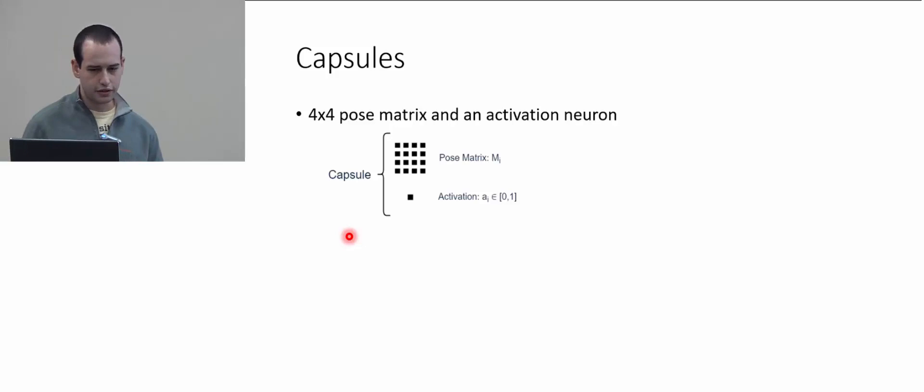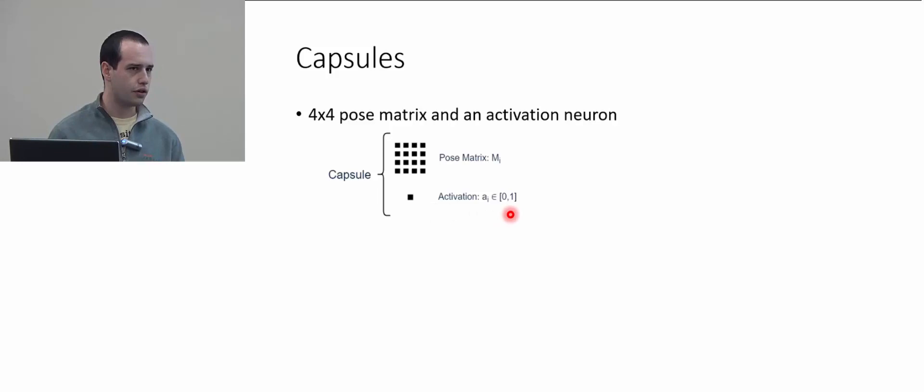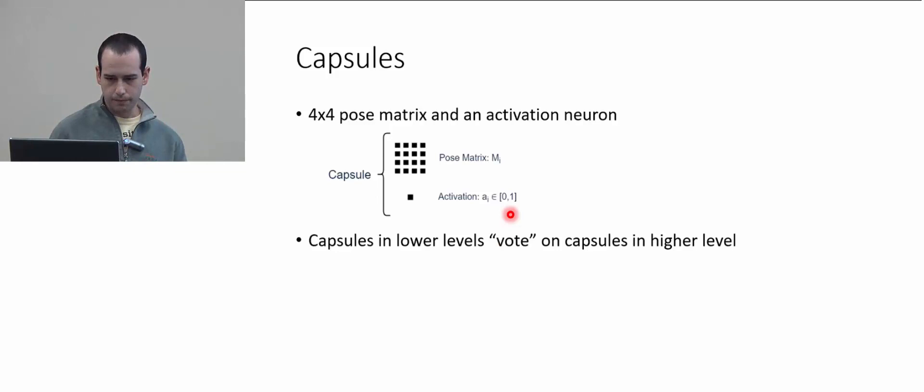More specifically, a capsule is defined as a four-by-four pose matrix and an activation neuron, so a total of 17 activations per capsule. The pose matrix holds these instantiation parameters, and the activation is between zero and one, defining whether or not the entity is present in the image or video.